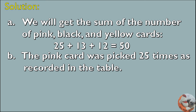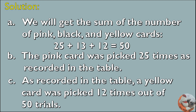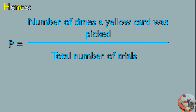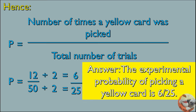The pink card was picked 25 times as recorded in the table. As recorded in the table, a yellow card was picked 12 times out of 50 trials. Hence, P is equal to the number of times a yellow card was picked divided by the total number of trials. Simplify by dividing both the numerator and the denominator by 2: 12 divided by 2 is 6, and 50 divided by 2 is 25. The experimental probability of picking a yellow card is 6 out of 25.